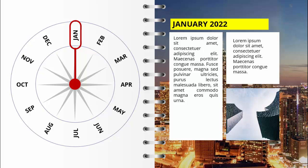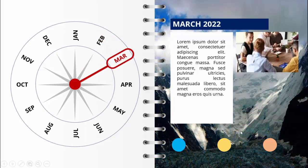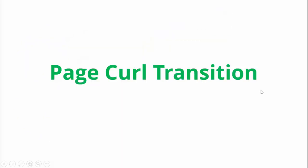On the first page, on the left side you can add a calendar starting from January till December, and on the right side you can give details for each one. For example, for January you can add more detailed text, some images, as well as background images. When you click, the needle goes to February and it changes the background image, the text, everything. Then it goes to March — likewise you can do for the rest of the months.